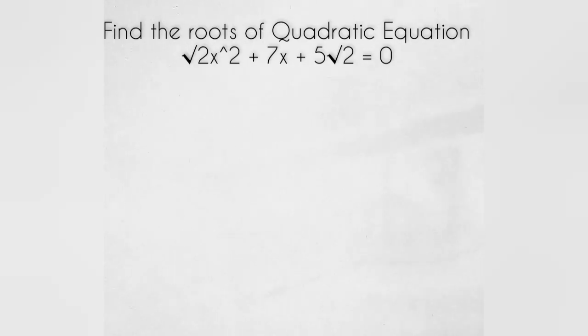So the example is root 2x square plus 7x plus 5 root 2 equals 0, and we have to find the value of x.